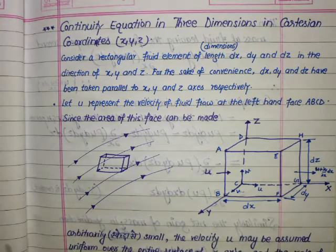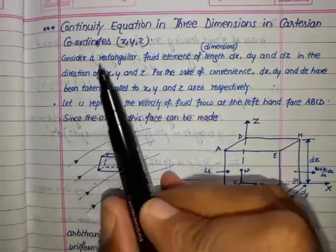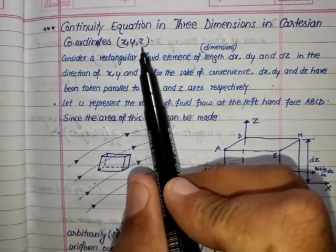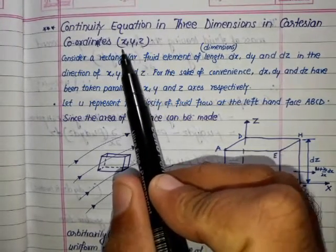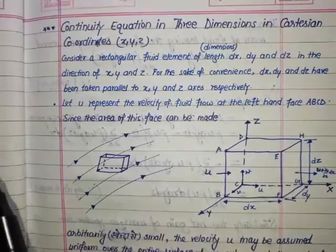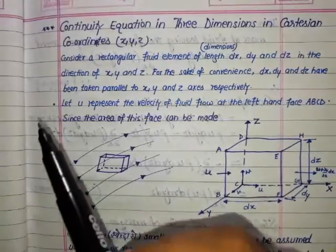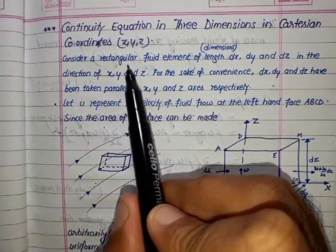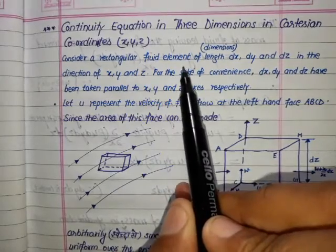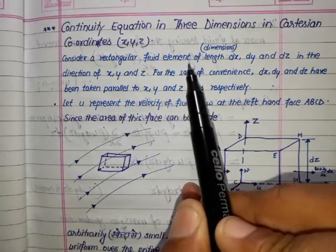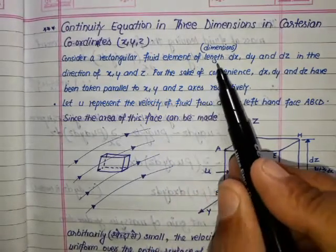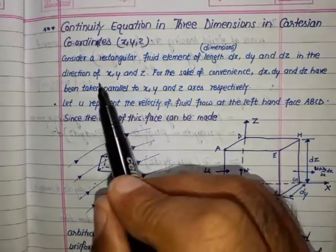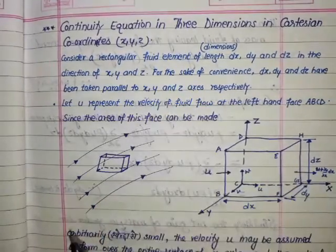There are basically three Cartesian coordinates x, y, and z — these are the three directions: x direction, y direction, and z direction. Firstly, consider a rectangular fluid element of dimensions dx, dy, and dz in the direction of x, y, and z.